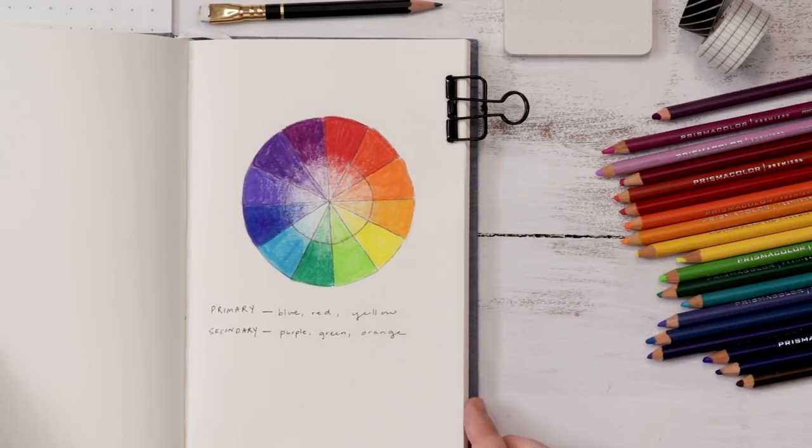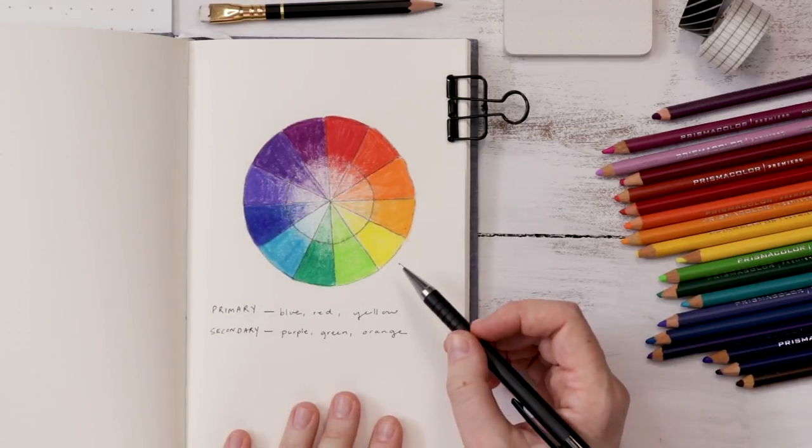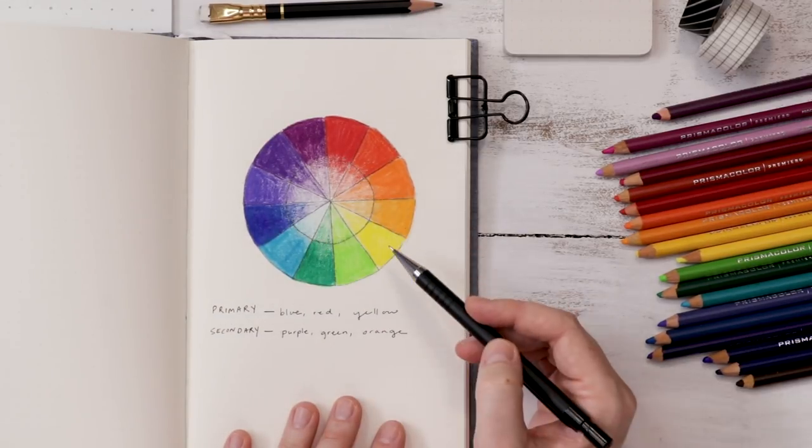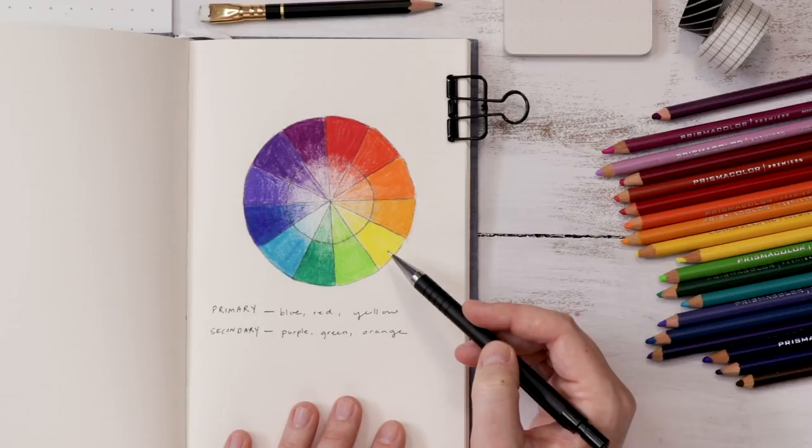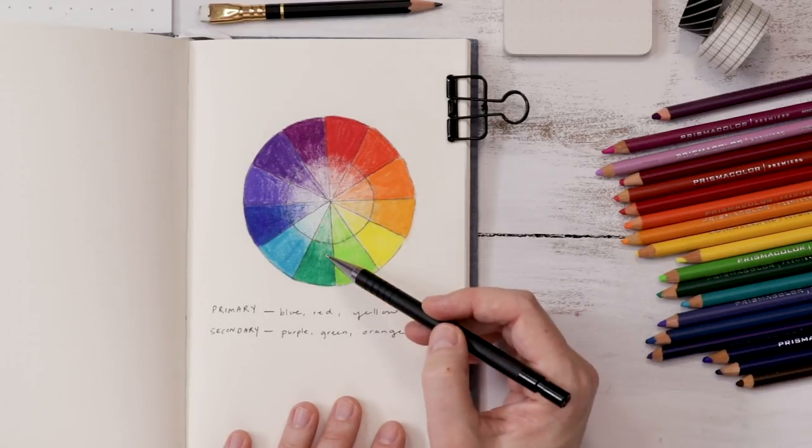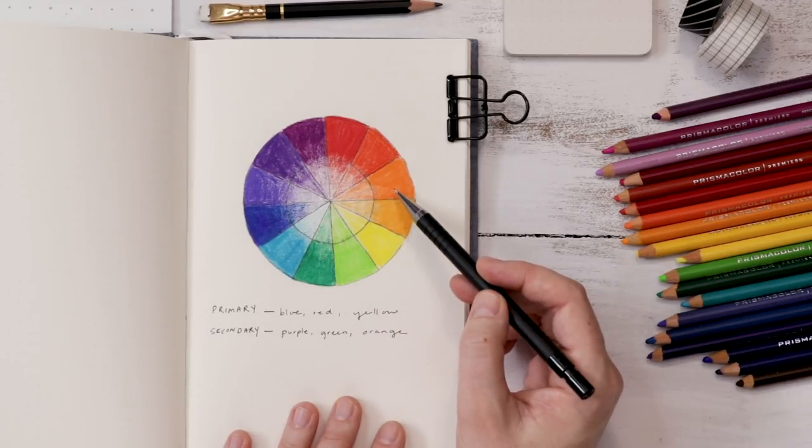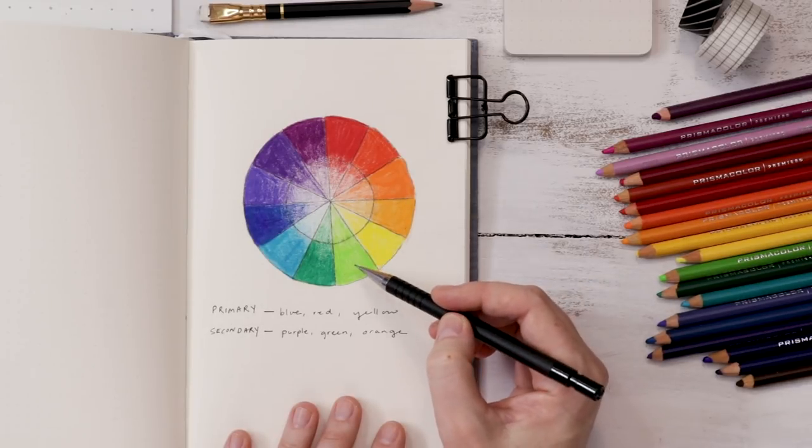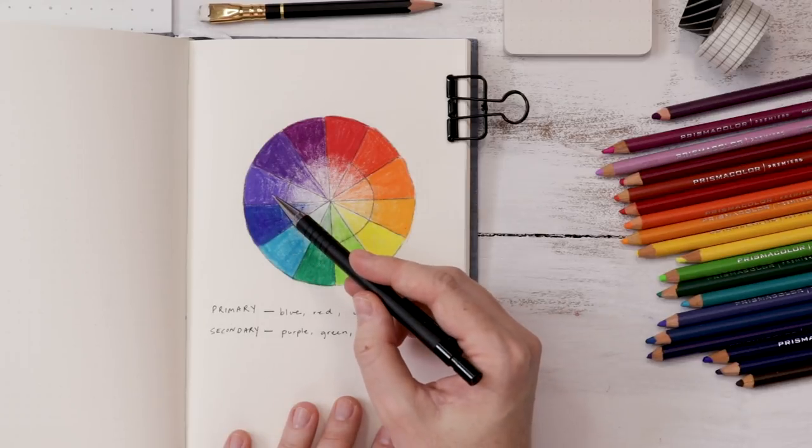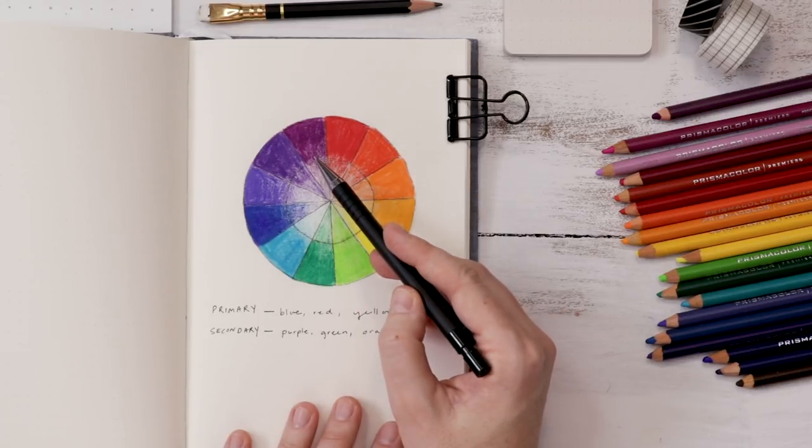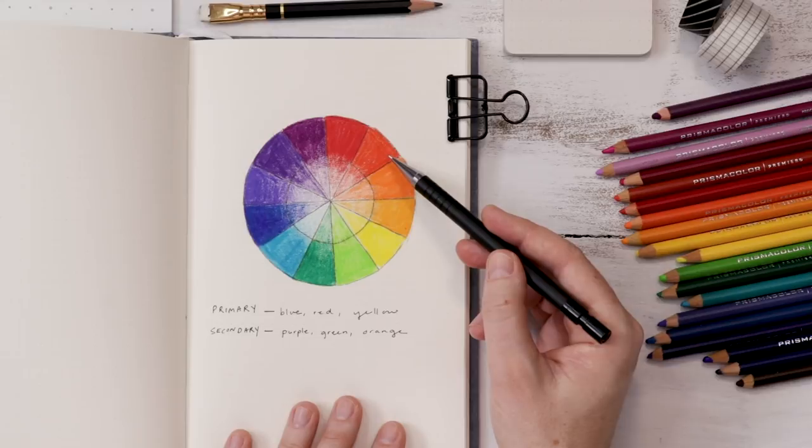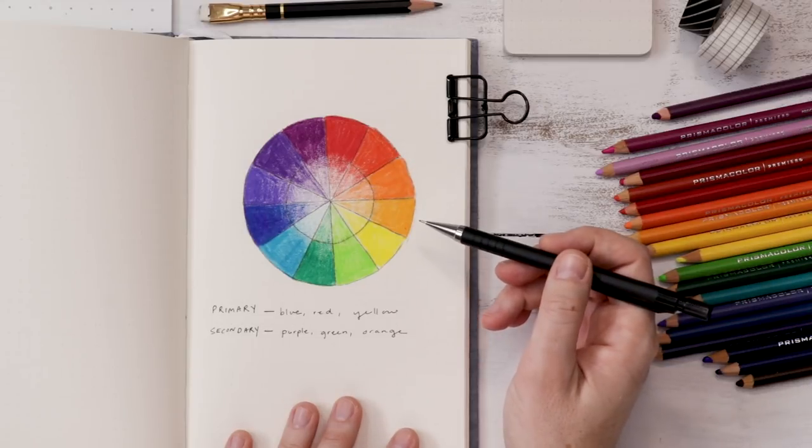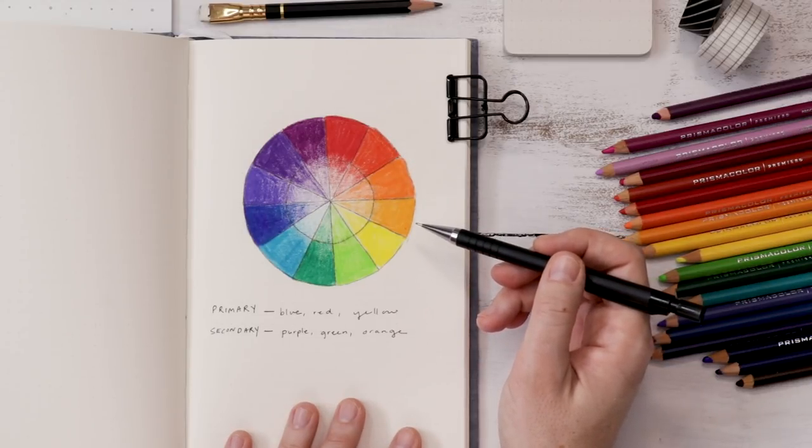You can see the wheel really shows us exactly how each color is mixed using those first three primary colors. With those primaries we can mix our secondaries of purple, green, and orange. And of course we mix the primary and secondary colors together to get the tertiaries of teal, violet, magenta, vermilion, amber, and chartreuse.